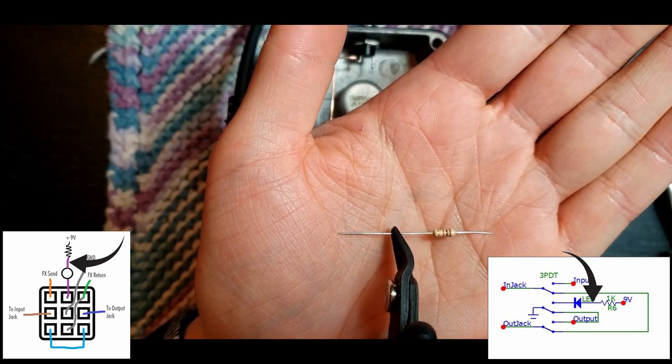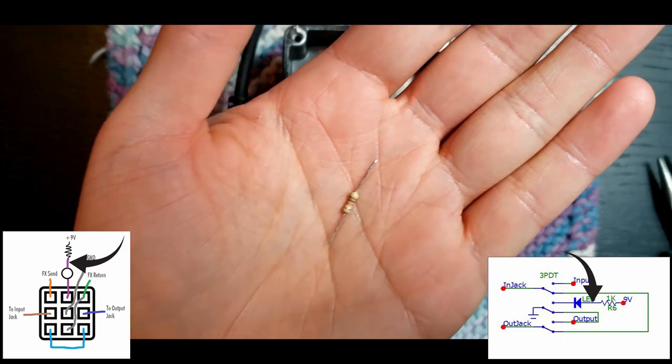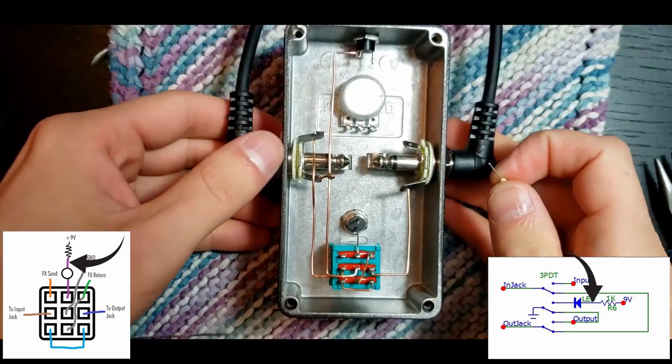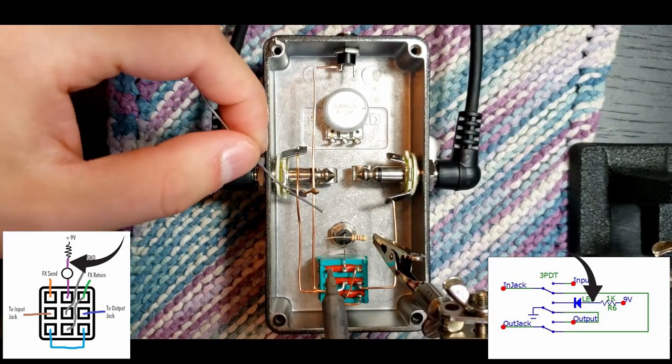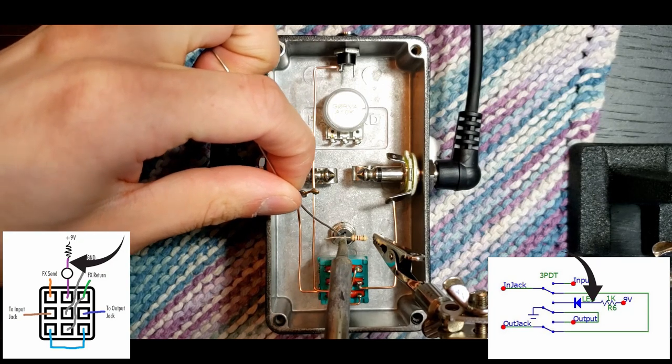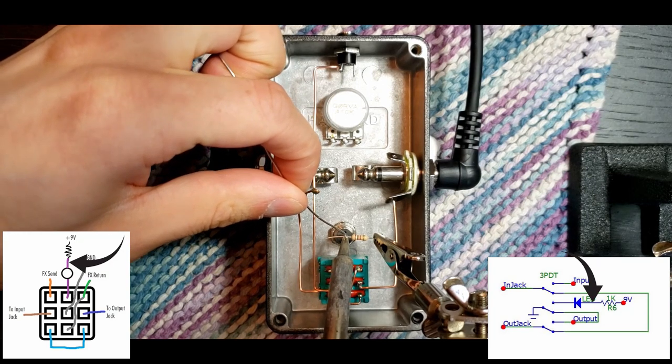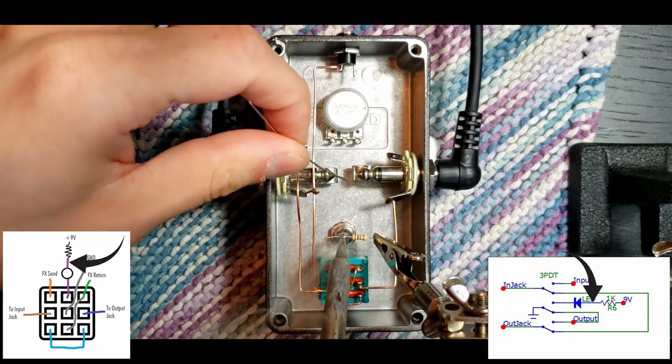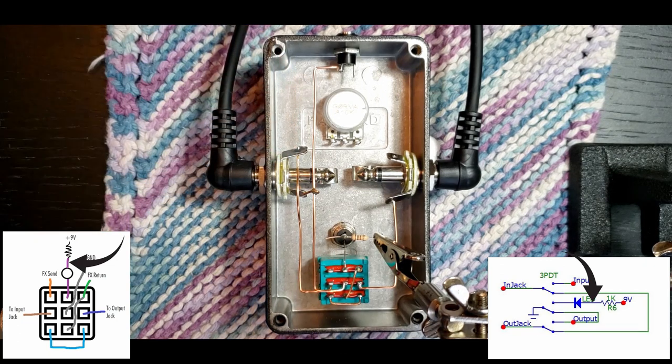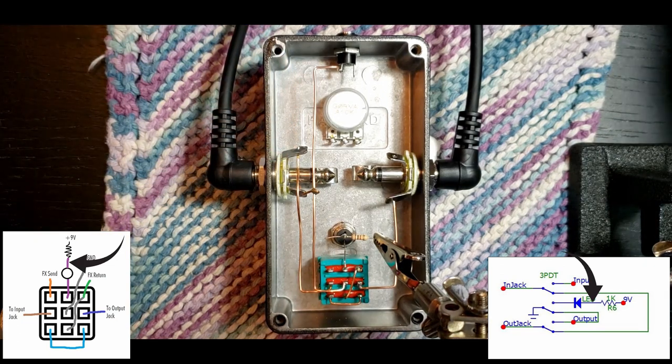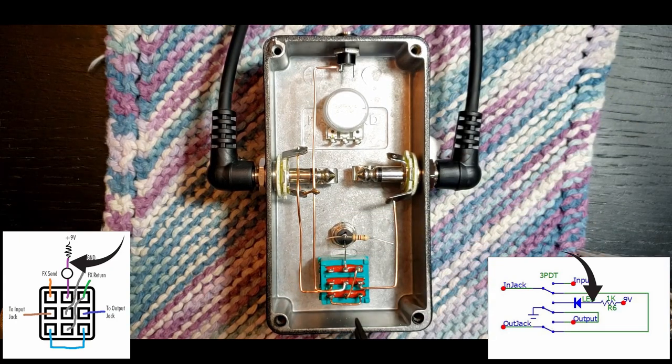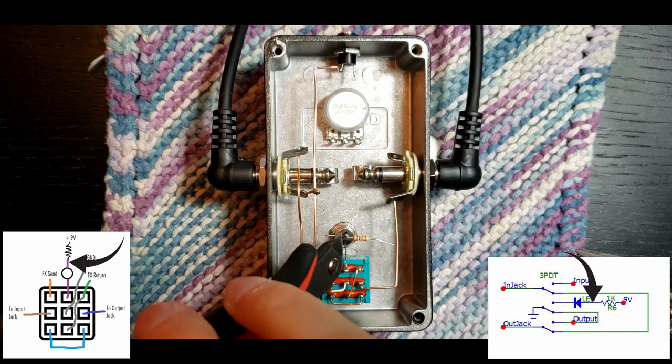Using your helping hands, grab one of the leads and put it in place onto the anode, the long end of the LED, and solder that in place. Make sure it's far enough down, around about where the ground node is. And trim the excess leads.